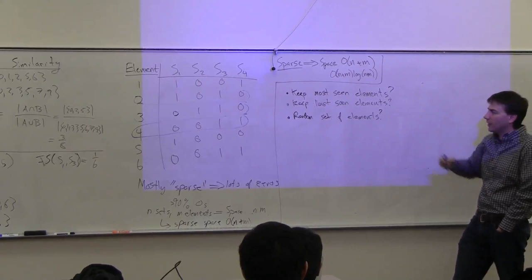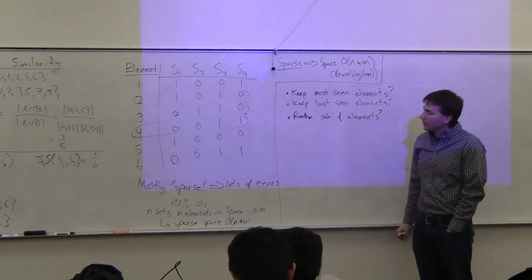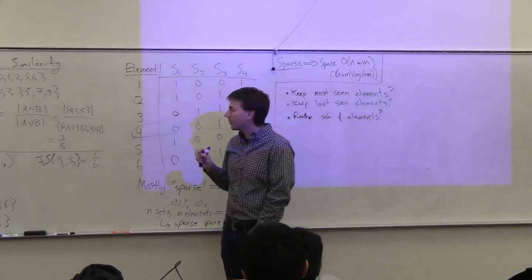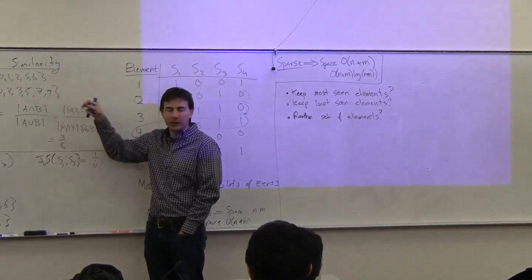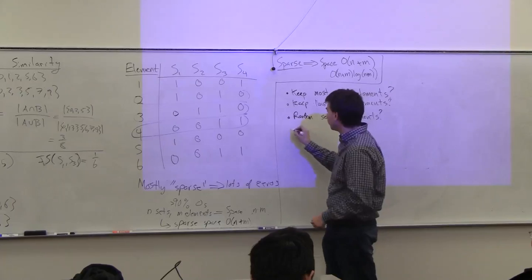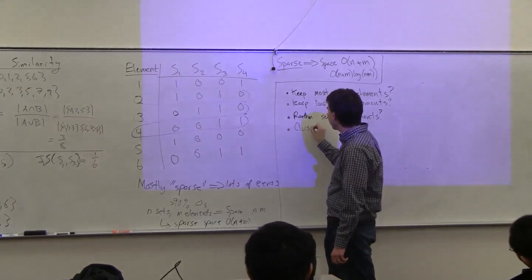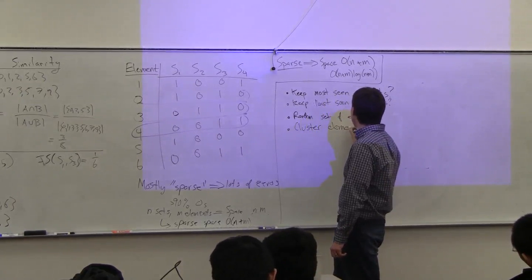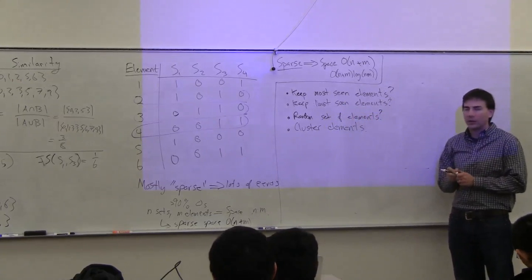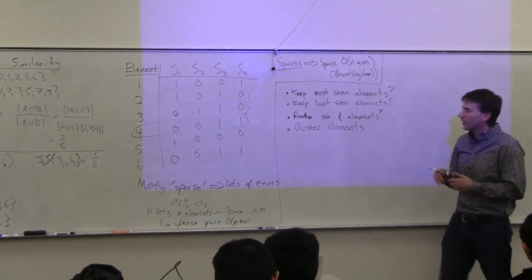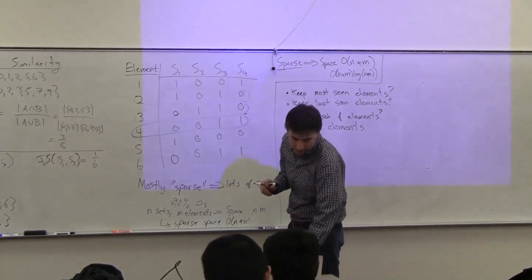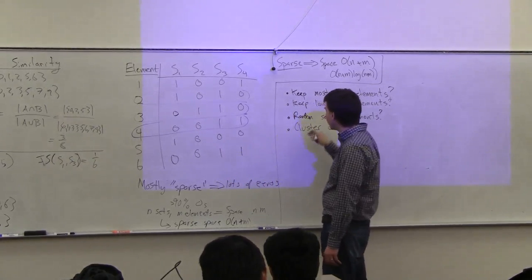So the solution we're going to get to is actually going to end up being close to random sampling, but it's not exactly a random set of elements. Just let me illustrate another attempt: we can cluster the elements. This will work similar to taking a random set. So if you randomly clustered which elements you keep, we're going to do something called hash clustering.